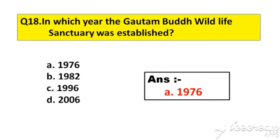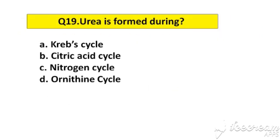Question number 19. Urea is formed during. Option A: Krebs cycle. B: Citric acid cycle. C: Nitrogen cycle. D: Ornithine cycle.